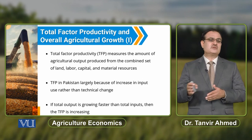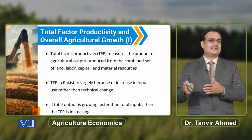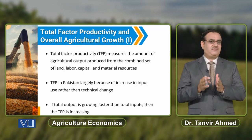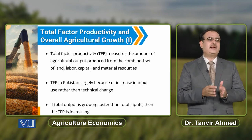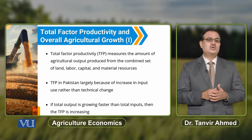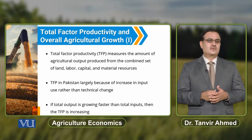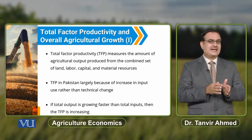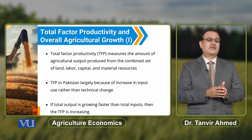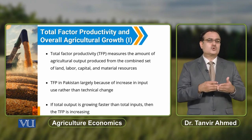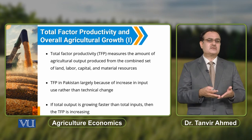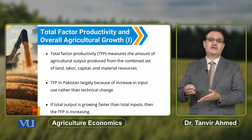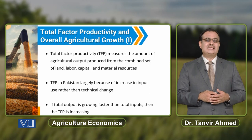When we talk about technical change, that is the way in which inputs are used to carry out production. When total output increases at a faster rate than total inputs, we can say that total factor productivity is increasing.